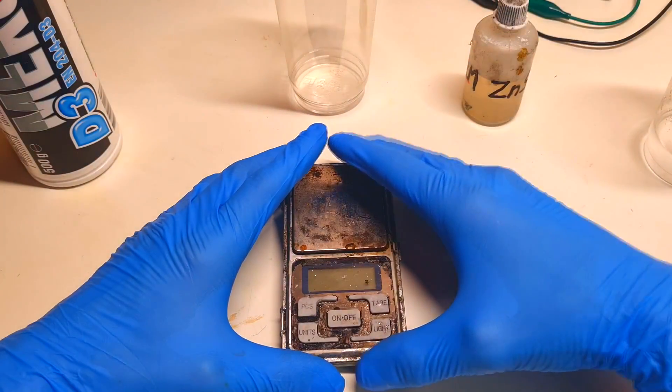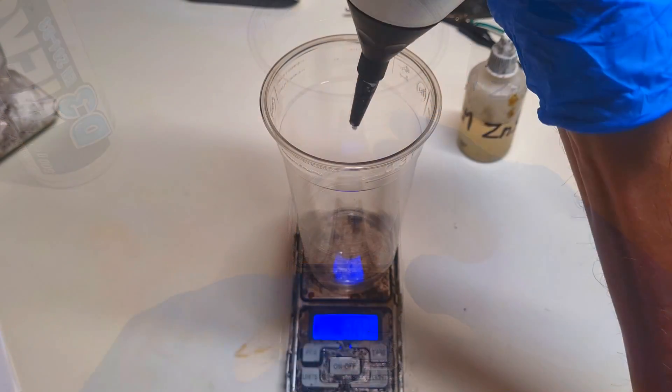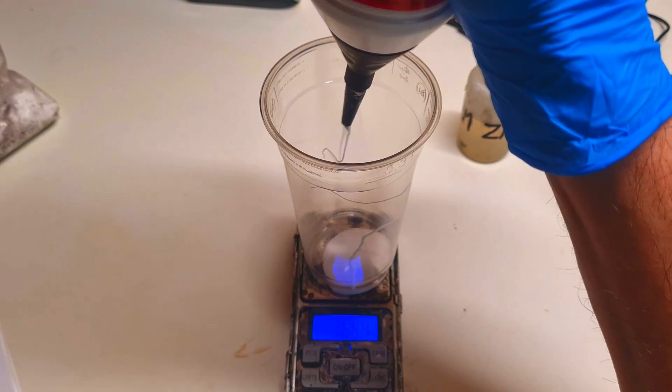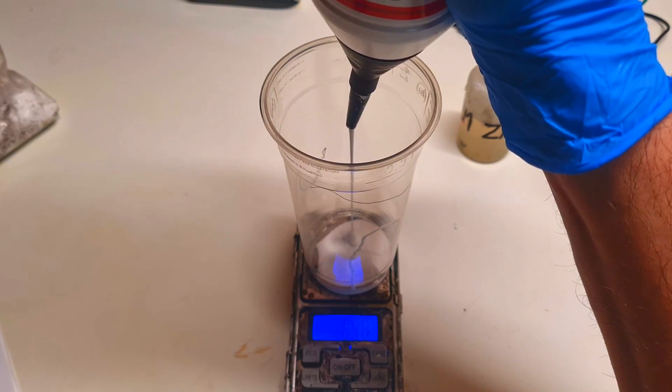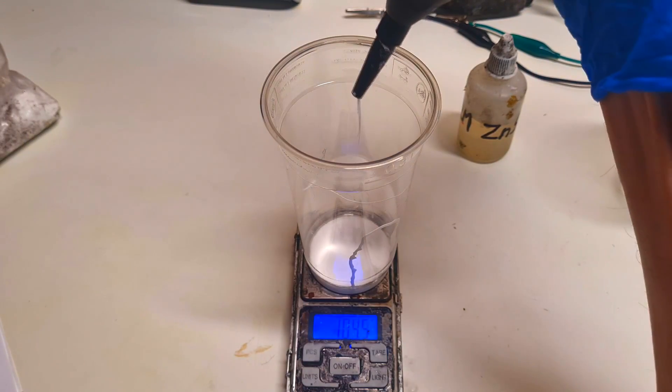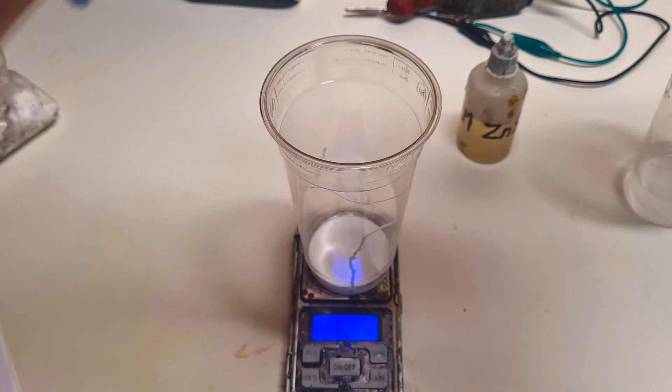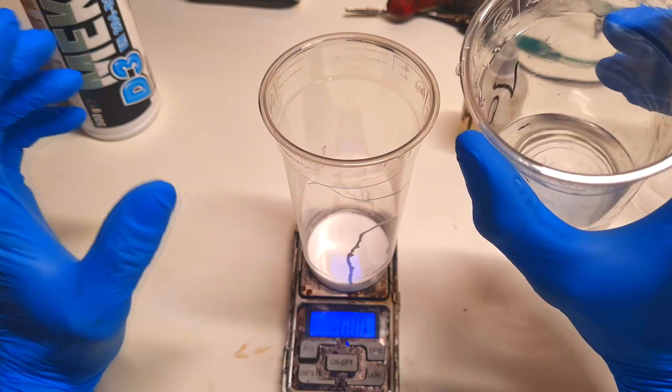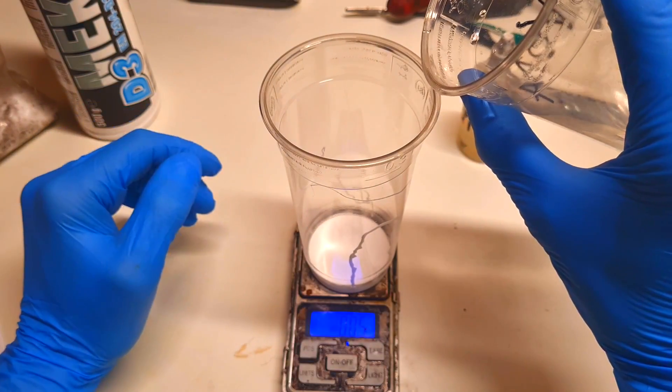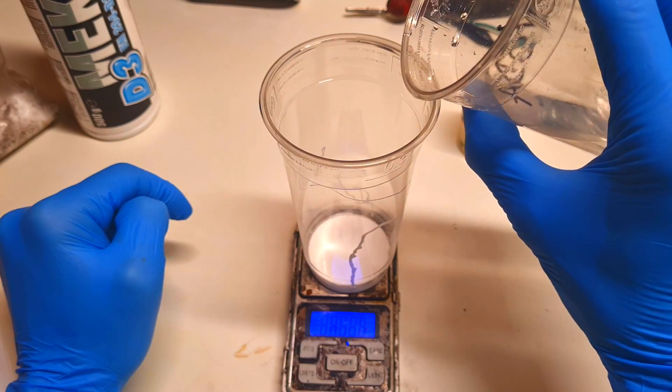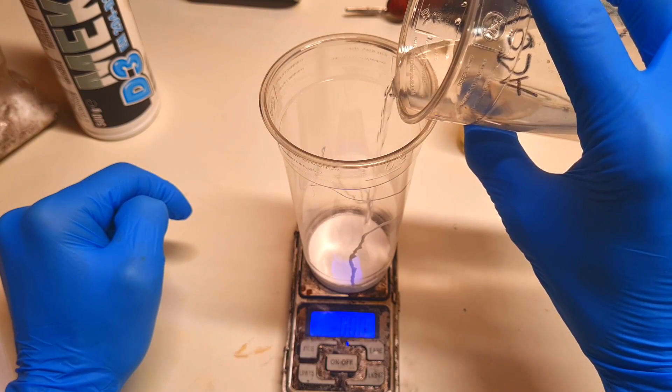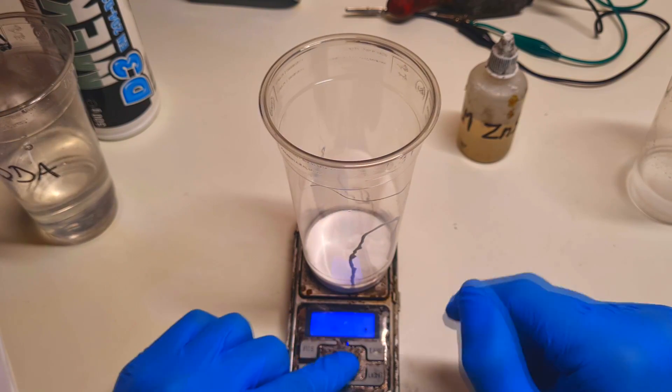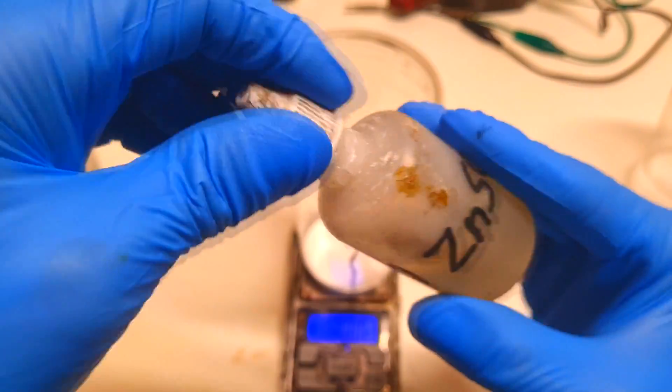Now I will prepare the mix of the PVA. I will use around 10 grams of PVA. Then I will add 5 grams of water, almost 6 grams, but this is not a problem. And now I will also add 5 grams of 2 molar zinc sulfate.